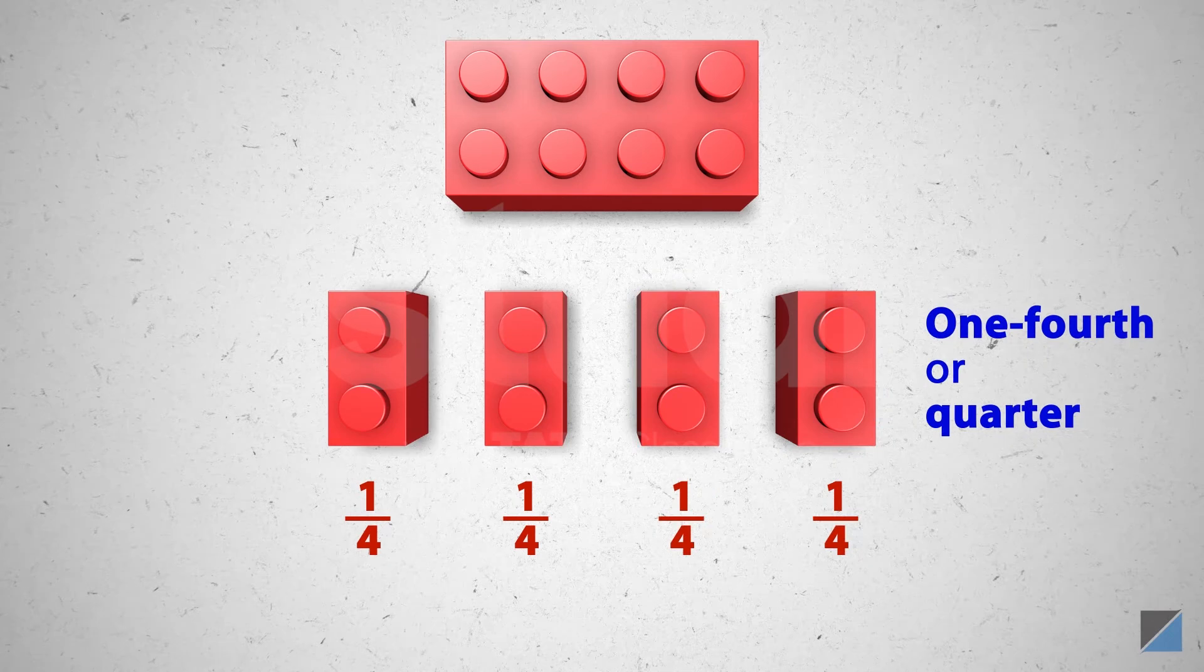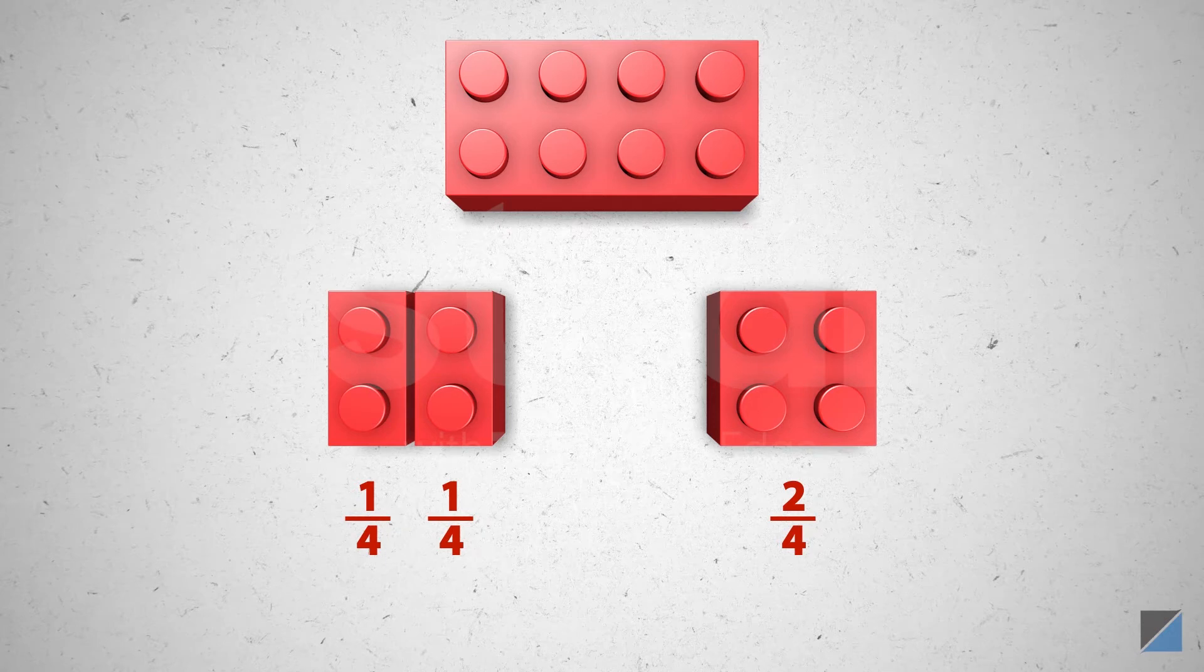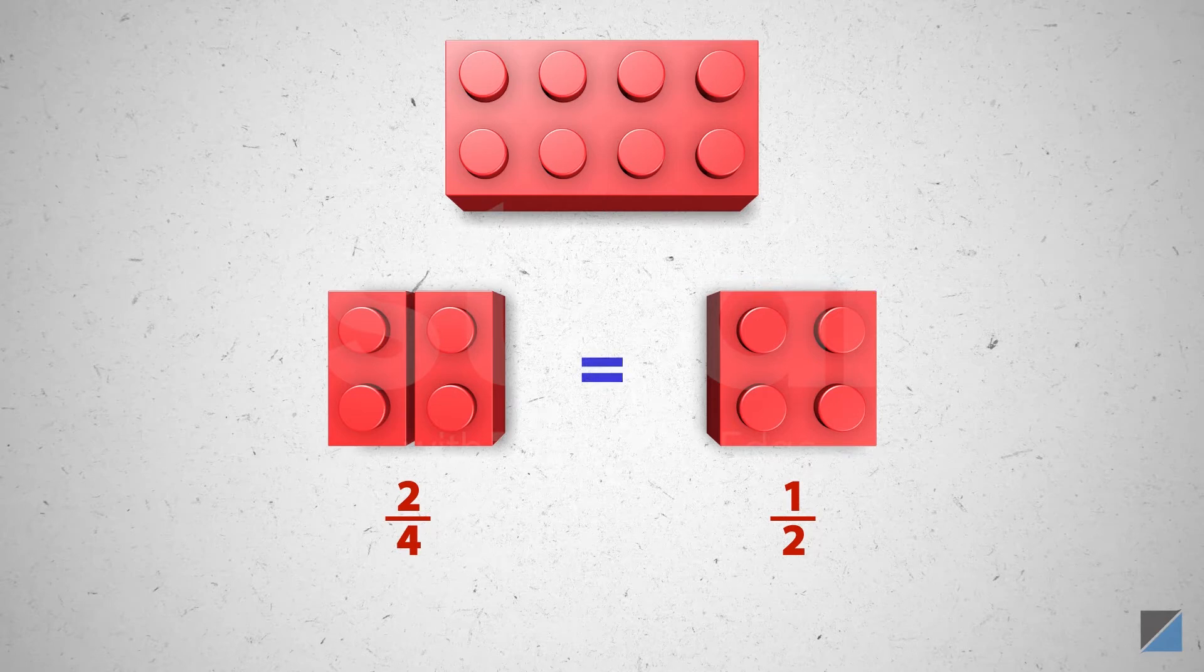Here are two parts out of four parts, or two fourths. Look, two fourths of the block and one half of the block are the same. So two fourths and one half are called equivalent fractions.